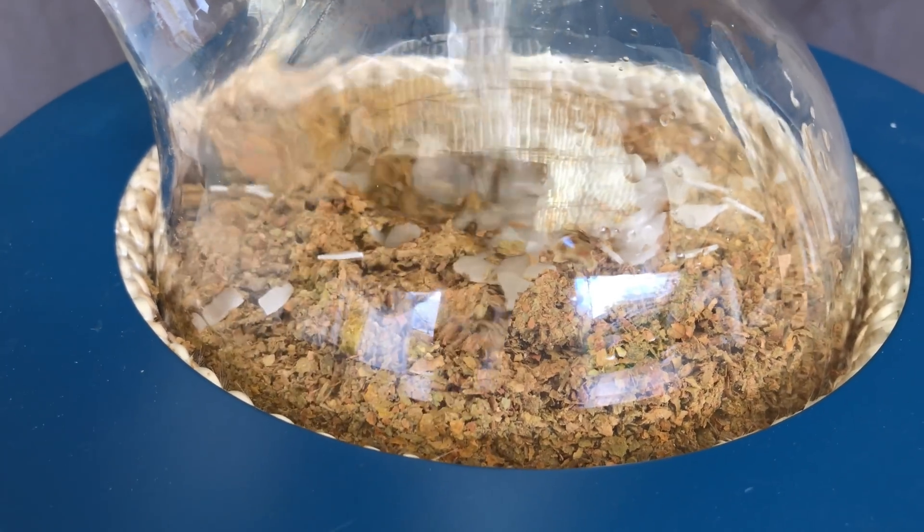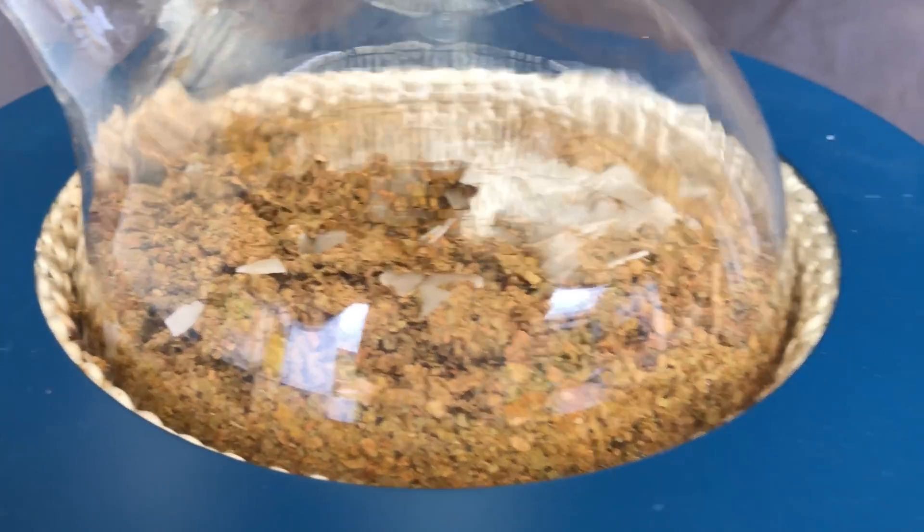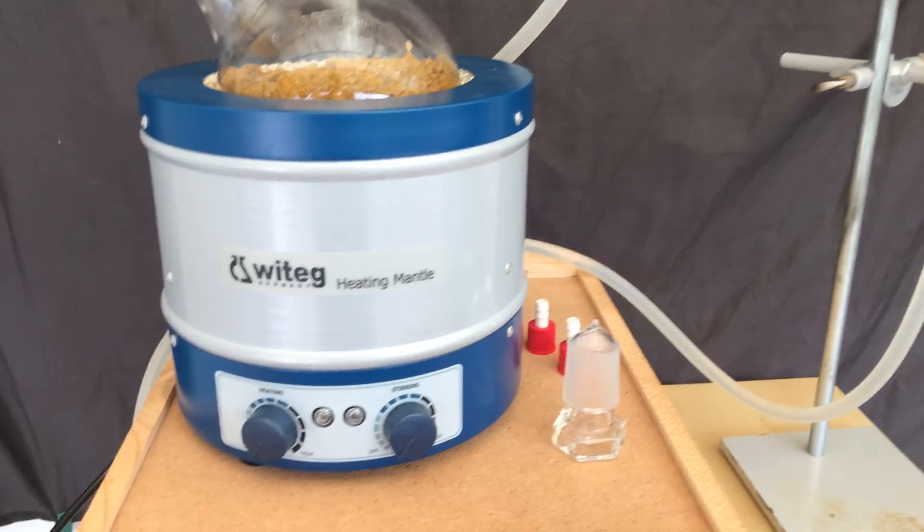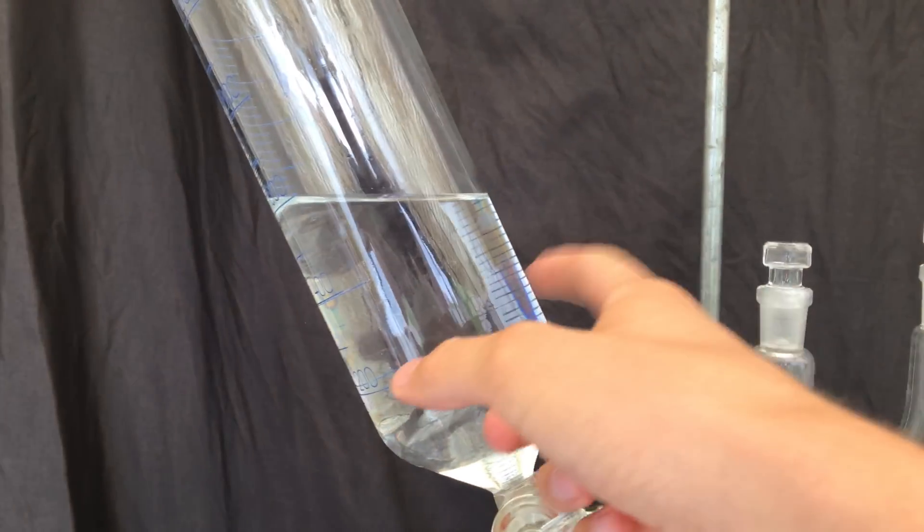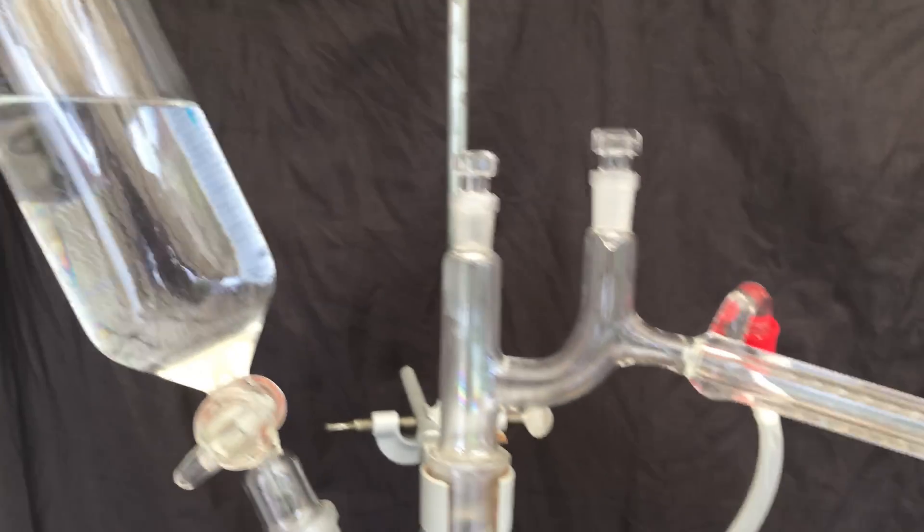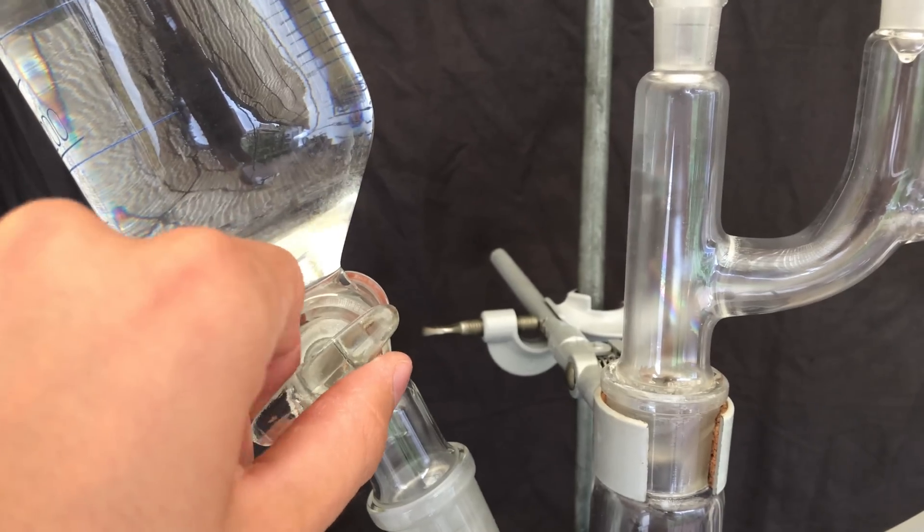Nicotine has a boiling point of about 250 degrees Celsius, which is relatively high. With the help of steam distillation, the high boiling yet volatile nicotine is carried over by the water vapor, drastically lowering the required temperature.